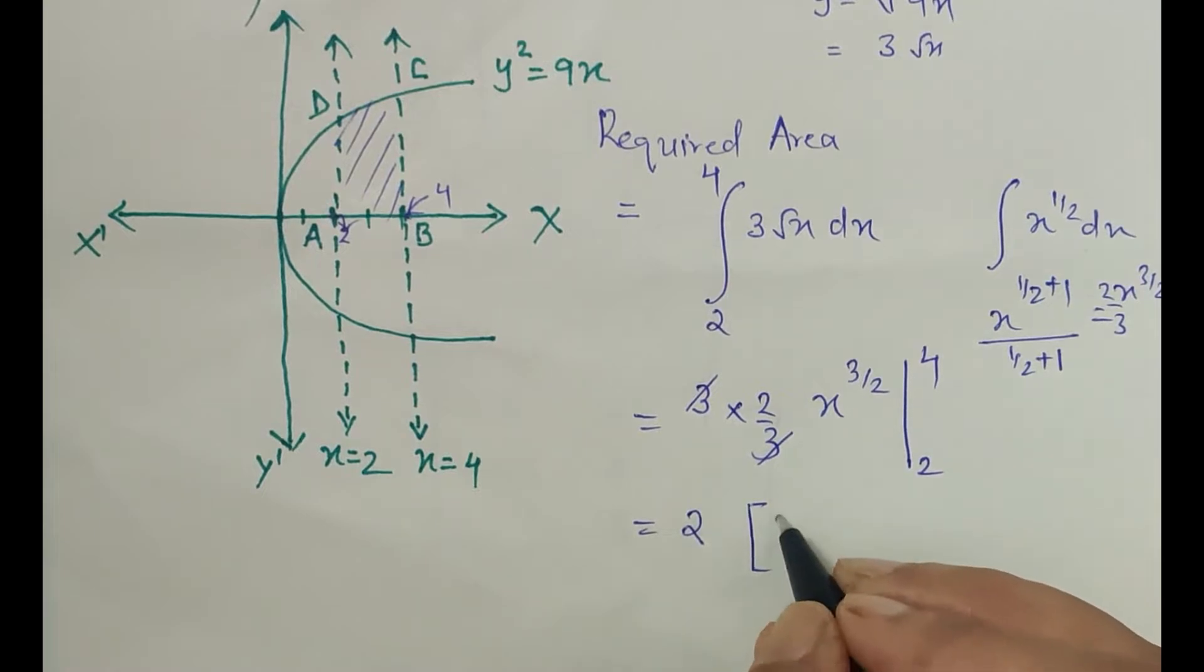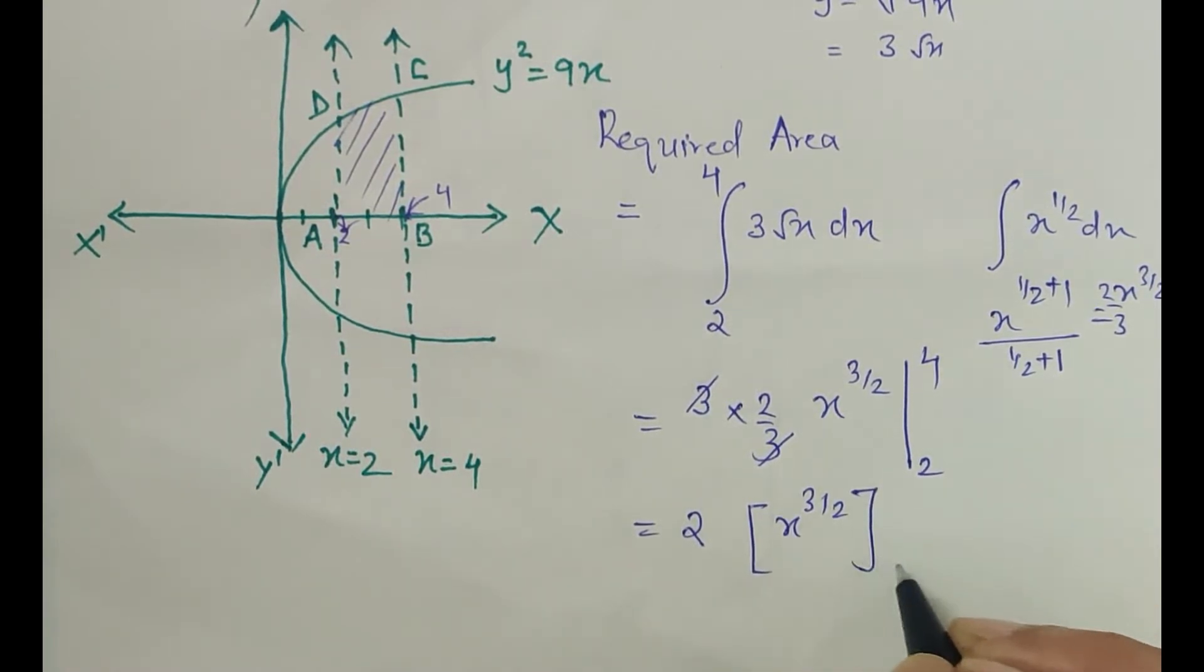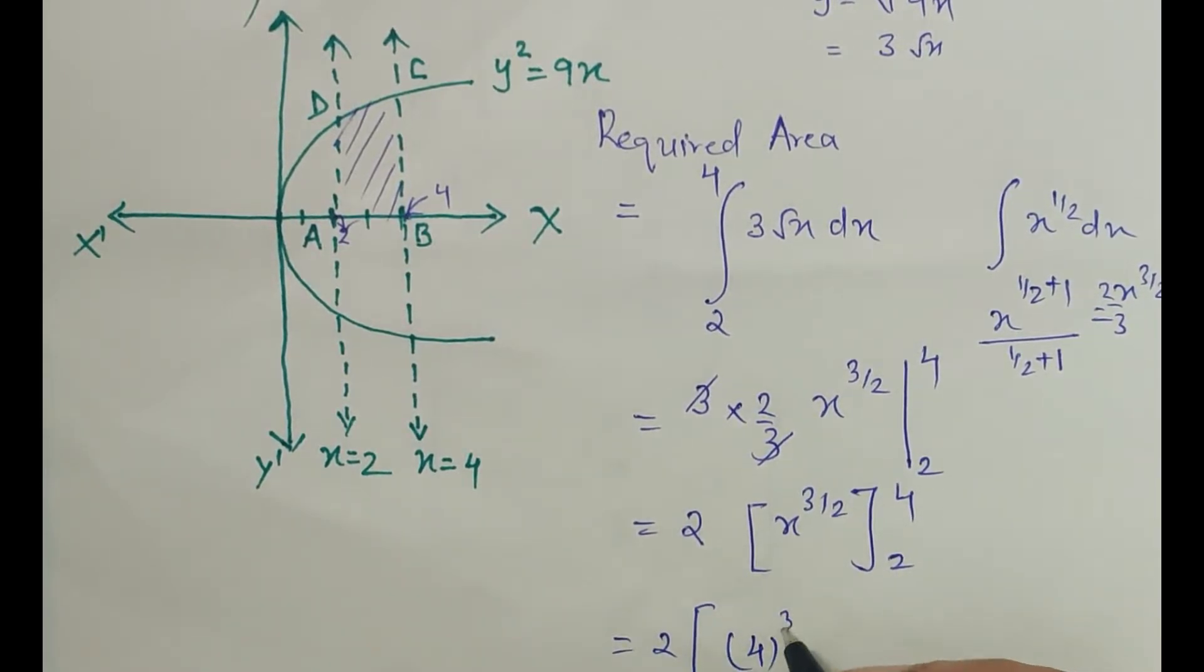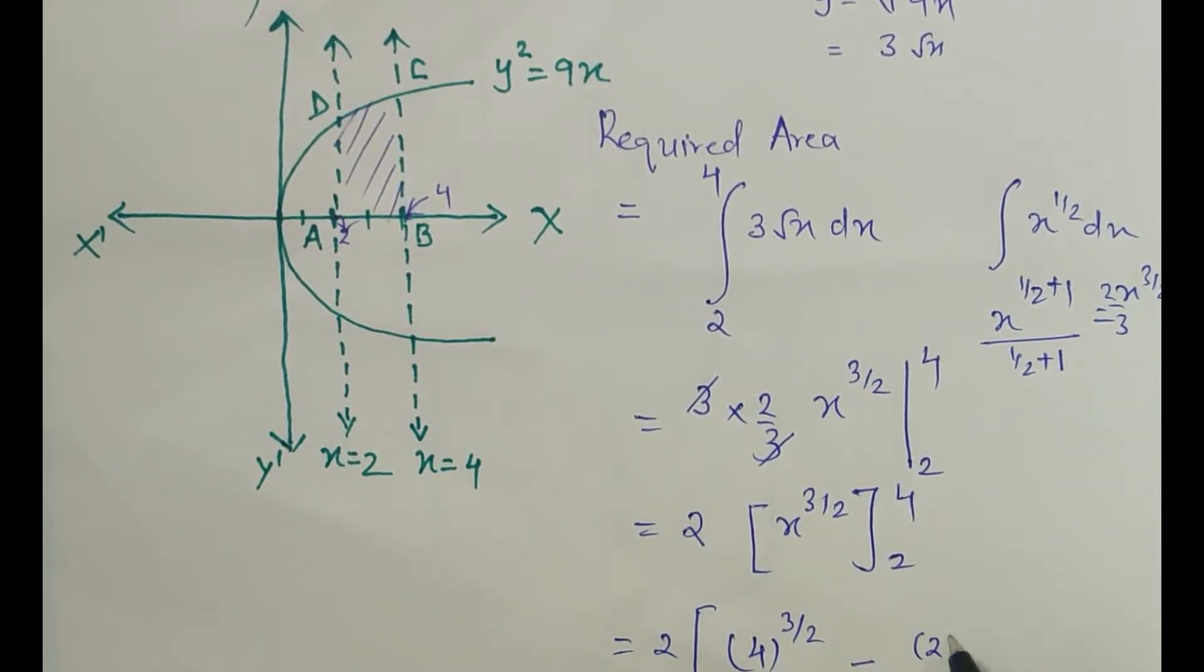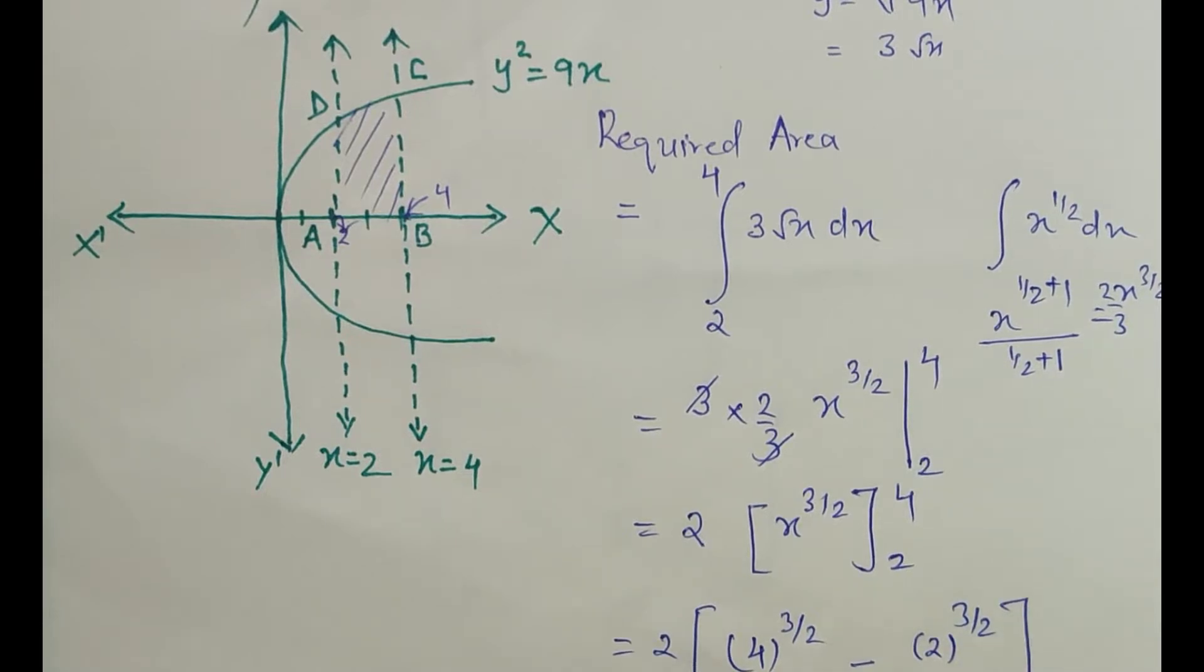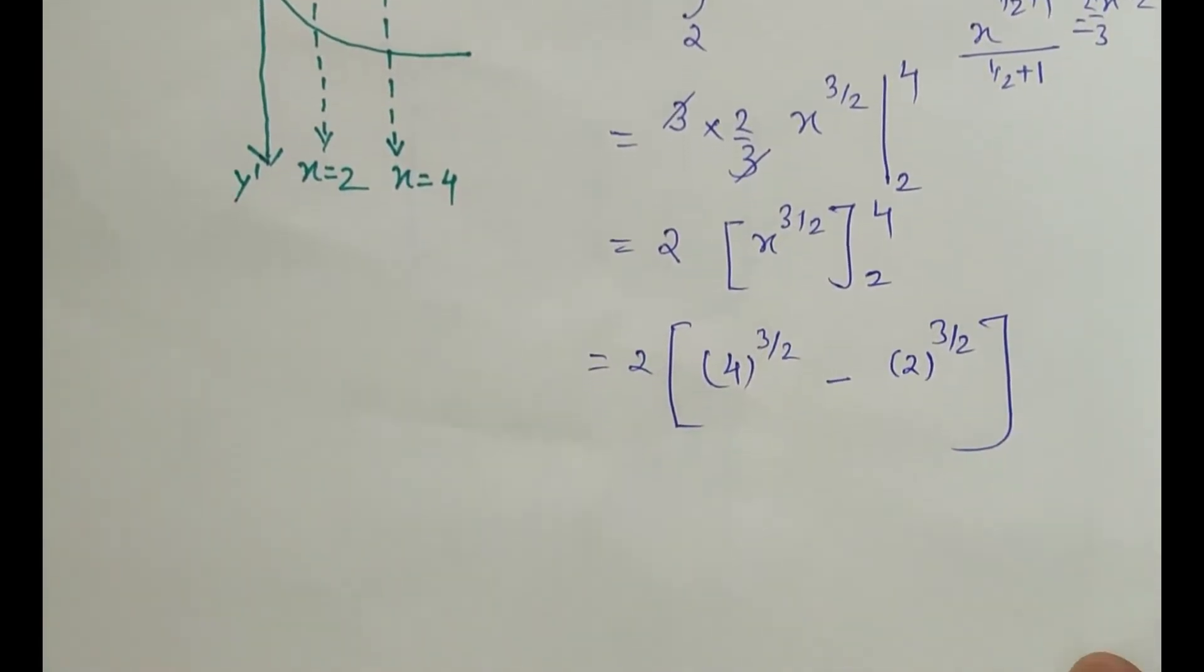Now we will put the upper limit minus the lower limit. So when I put upper limit 4^(3/2) minus lower limit 2^(3/2), now we have to solve this.